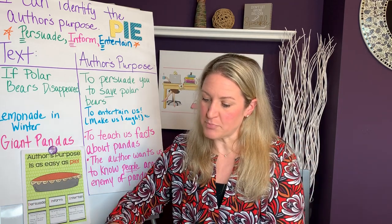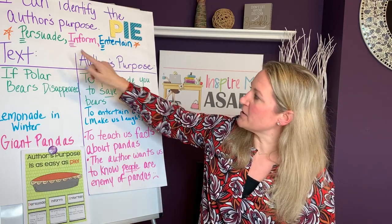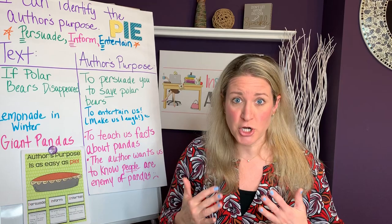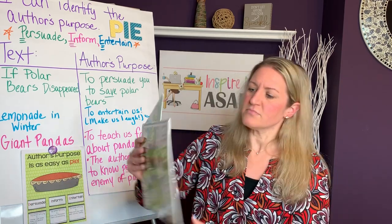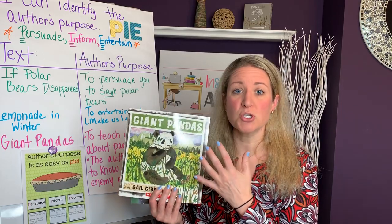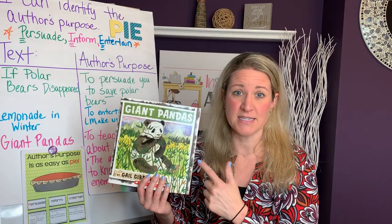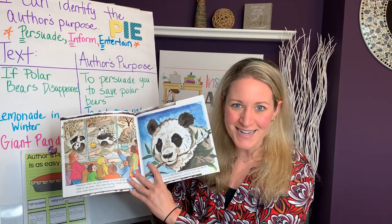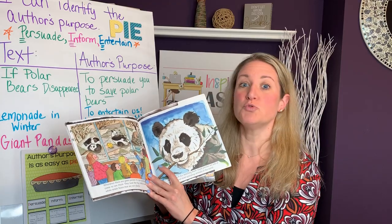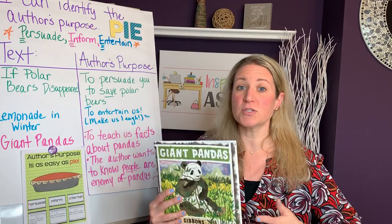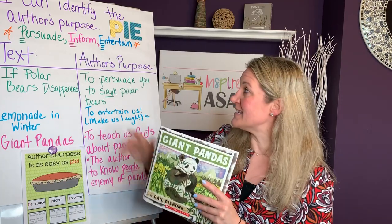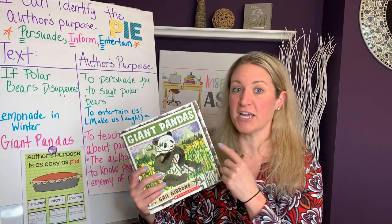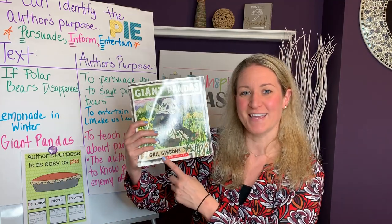For example, I would say, boys and girls, one reason that an author might write a text is to persuade us — to persuade us to think or believe something they want us to think or believe, to change our mind about something. This is an example of a text that would persuade us to help save the giant pandas in the world. I might also explain how this could also be a text that is informing or teaching us about giant pandas, so it could be two different purposes that Gail Gibbons is using to write this book.